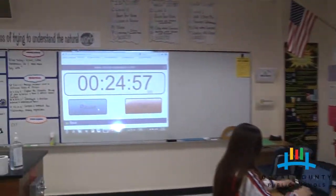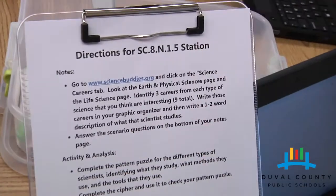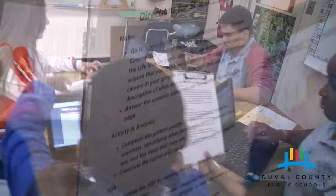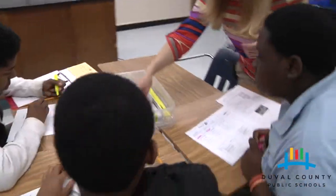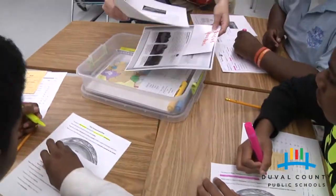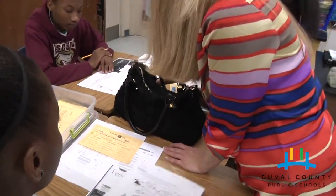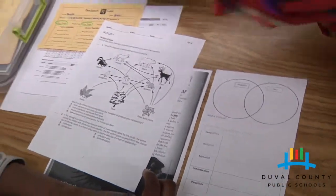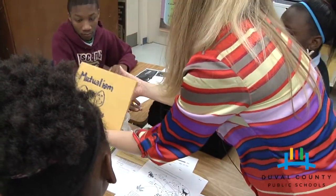You guys are going to Science Buddies first — look at the different types of sciences, look at the careers, find some that interest you, and put them into the graphic organizer. We are looking at our guided notes. Once you're finished, move to the pattern puzzle on the different types of boundaries. Use this to complete the Venn diagram and the different types of relationships. Once you've done that, complete the matching game — the cards and analysis questions go with that.